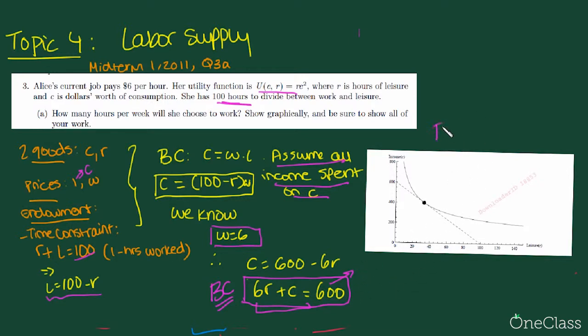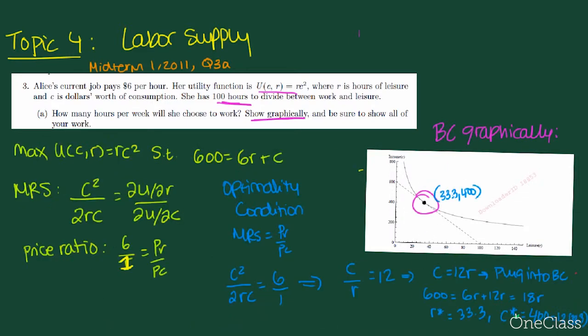And this is how our budget constraint looks graphically. And this is the answer to the first part of the question, which says show graphically. They also want us to specify how many hours per week she'll choose to work. So we have to solve a utility function, find the optimality condition, and calculate the value of L at this point right here.